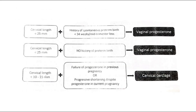This is a simplified management chart. For a shortened cervical length less than 25mm, consider giving vaginal progesterone as prophylaxis. For a very shortened cervical length of less than 10–15mm, if there is failure of progesterone in a previous pregnancy or progressive shortening despite progesterone in the current pregnancy, consider cervical cerclage to prevent preterm delivery.